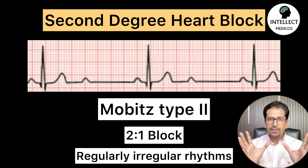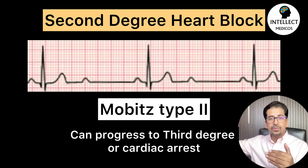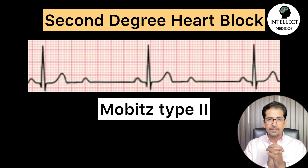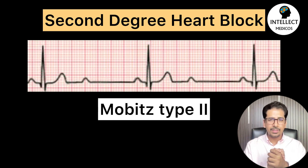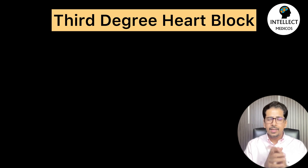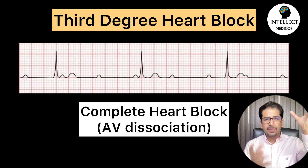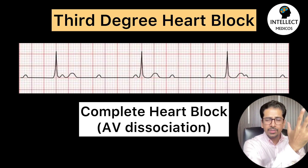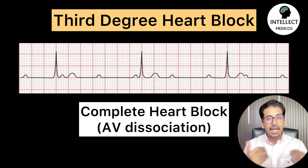Second-degree type 2 is very important and can be lethal. It can worsen and progress toward third-degree heart block, also called complete heart block. The patient can develop bradycardia or cardiac arrest. Third-degree heart block is where there is no relation between the atria and ventricles — called AV dissociation. The atria contract on their own and the ventricles contract on their own. It is very, very lethal.